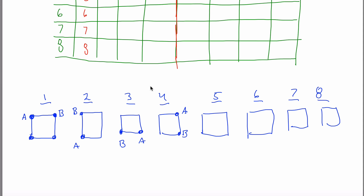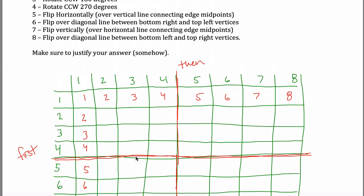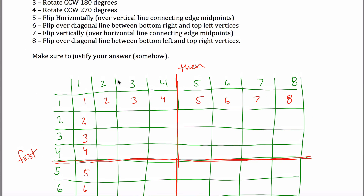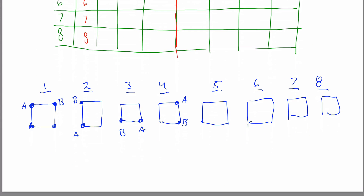Here are the rotations. Then there are reflections: number 5 says flip this thing horizontally, over the vertical line connecting edge midpoints. There's this vertical line, and if I flip over that line, A used to be here and now it flips over to the other side. B used to be here and now it flips to here. Here's a picture of what 5 looks like.